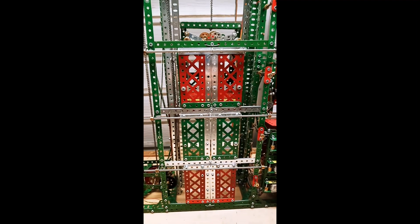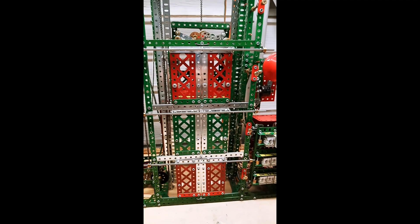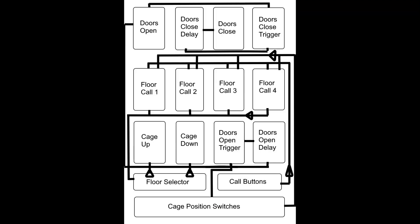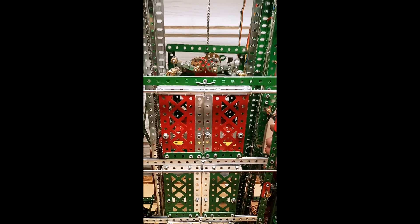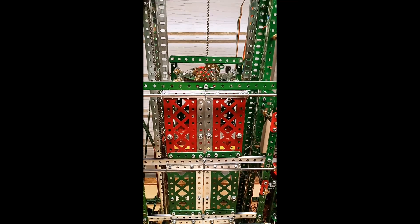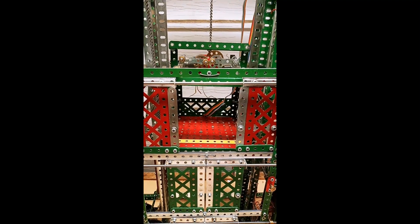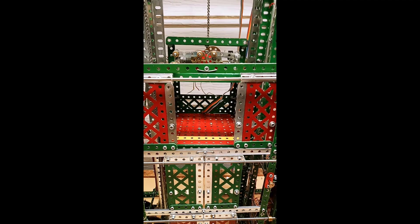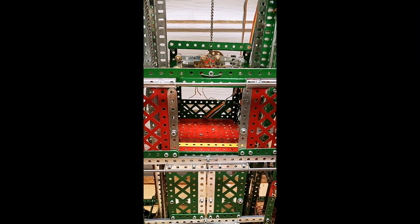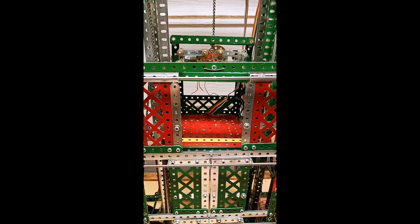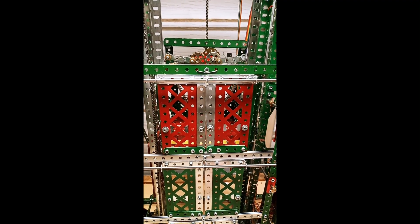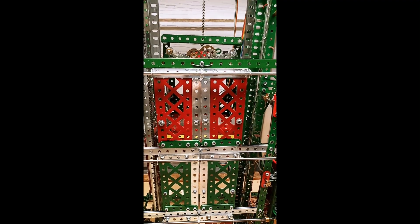That's as far as the logic goes, and it still takes 12 relays to do all this. There are issues — for instance, if I press the call button on the floor where the cage is already parked, the cage moves slightly, but at least the doors open so a passenger can get in and then it closes again, and they can move to the floor they want.